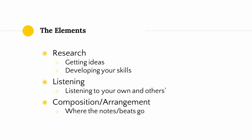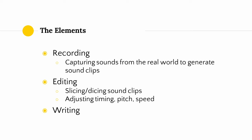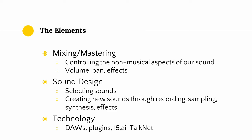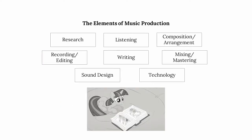First, research — for getting ideas for your music and also to help develop your skills as a music producer. Listening — the skill of how to listen to your own productions and build your musical skills by listening to others. Composition and arrangement — deciding where the notes and beats go. Recording — capturing sound from the real world. Editing — slicing and dicing sound clips and adjusting parameters like timing, pitch, and speed. Writing — the process of writing lyrics. Mixing and mastering — controlling aspects of our music like volume, pan, and effects. Sound design — selecting or creating new sounds through recording, sampling, synthesis, and effects. And lastly, working with technology — DAWs, plugins, and in our case, AI software like 15.ai and TalkNet. All of these different skills come together to create the unholy mass that is music production.